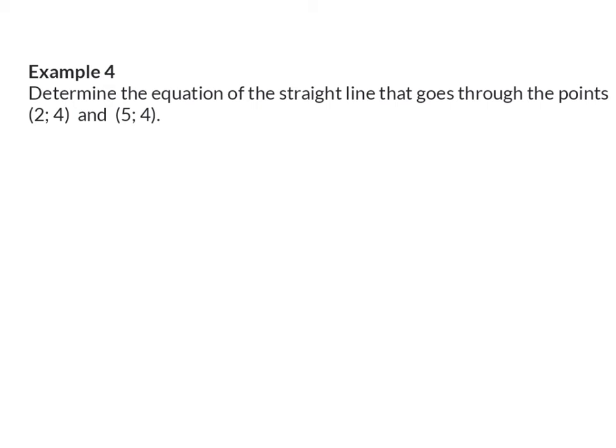Example 4. Determine the equation of the straight line that goes through the points (2, 4) and (5, 4). Similar to example 3, here you need to realize that this time the two y values are exactly the same, and therefore there will be a change of y of 0, and that is because it's a horizontal line. For a horizontal line, the standard form is y is equal to a constant, and in this case that constant will be 4, and that is your answer.